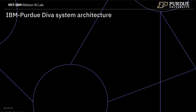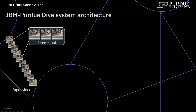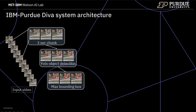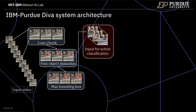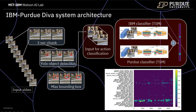Let's start with an overview of our system. We take an input video and usually process three-second chunks of this input video. We then run YOLO object detection to detect cars, persons, and bicycles, and take the maximum bounding box of those detections as input for our action classifier. The action classification is then done by two models, one trained on the IBM side and one trained on the Purdue side. We take the mean over both outputs as the action recognition for this chunk, and finally add this to the overall list of actions for this video. The heavy lifting in this whole architecture is done by the classifiers, which is why I want to talk a bit more about those approaches in the following slides.